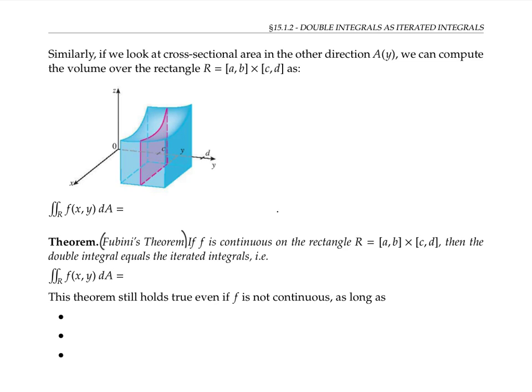We can do an analogous process by slicing in the other direction with planes that are parallel to the xz-plane. Now, our volume is going to be the integral as y ranges from c to d of our cross-sectional area, which is now a function of y. But as before, the cross-sectional area at position y can itself be thought of as an integral, now going in the x direction from x equals a to x equals b of our function dx. So putting this together, our double integral is our integral with respect to y of our integral with respect to x.